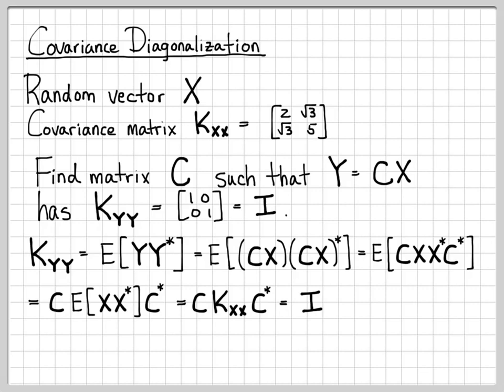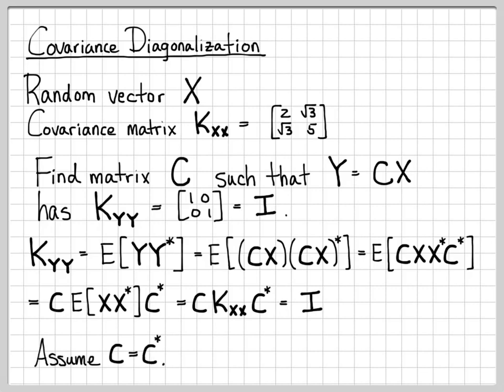We want K_yy to equal the identity matrix when we're done with the transformation. This is the identity we'll work with to solve for C. We're actually going to do this two different ways: in this first video, we'll do it algebraically, just manipulating this expression. In the next video, we'll solve for C using eigenvalues and eigenvectors.